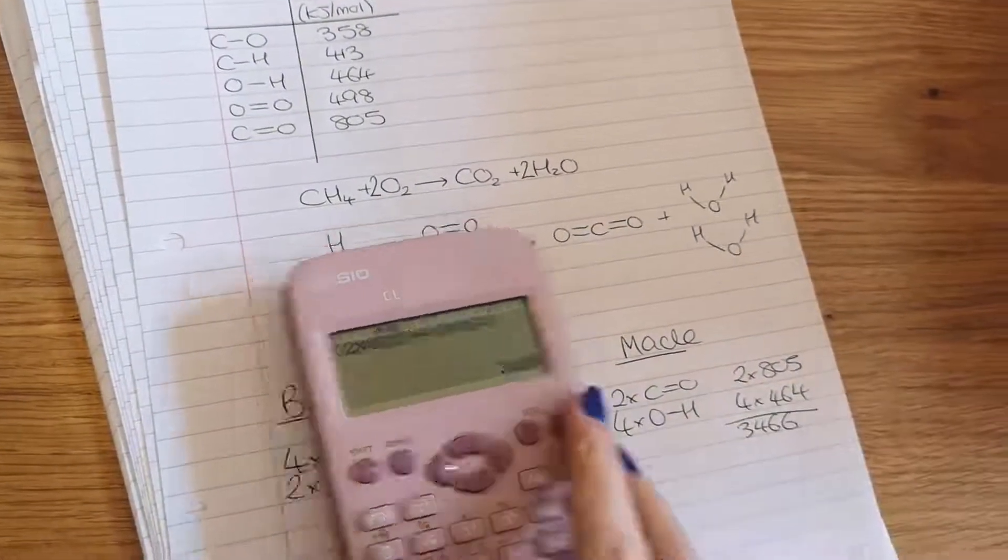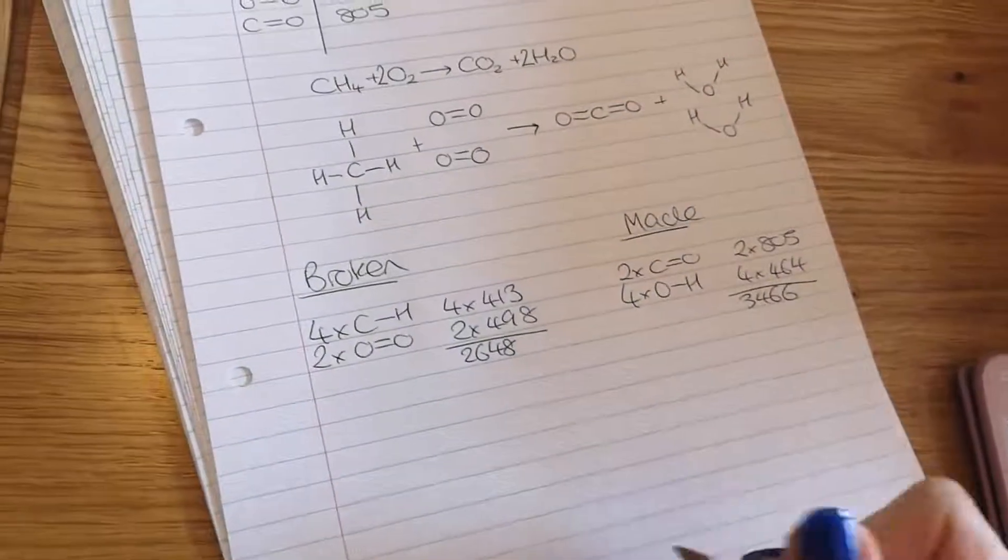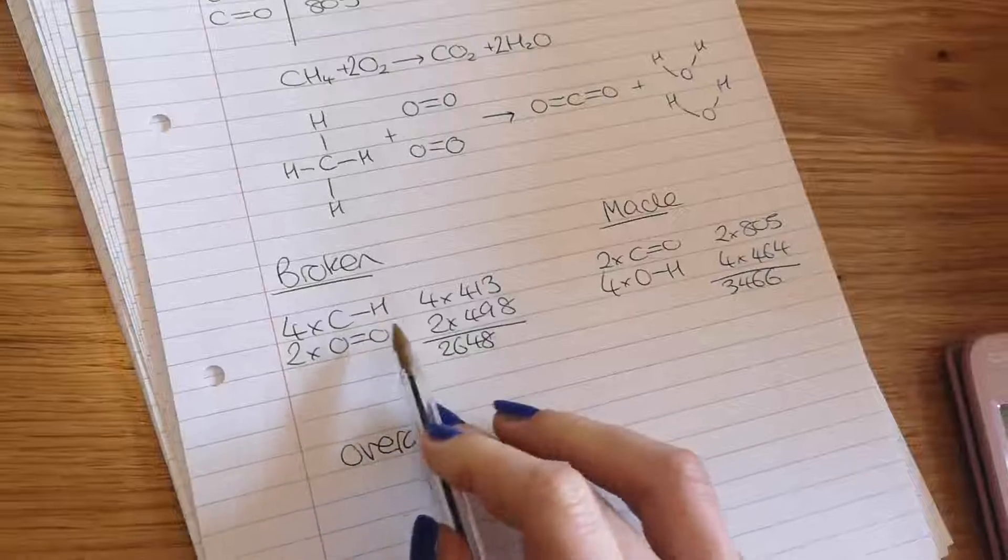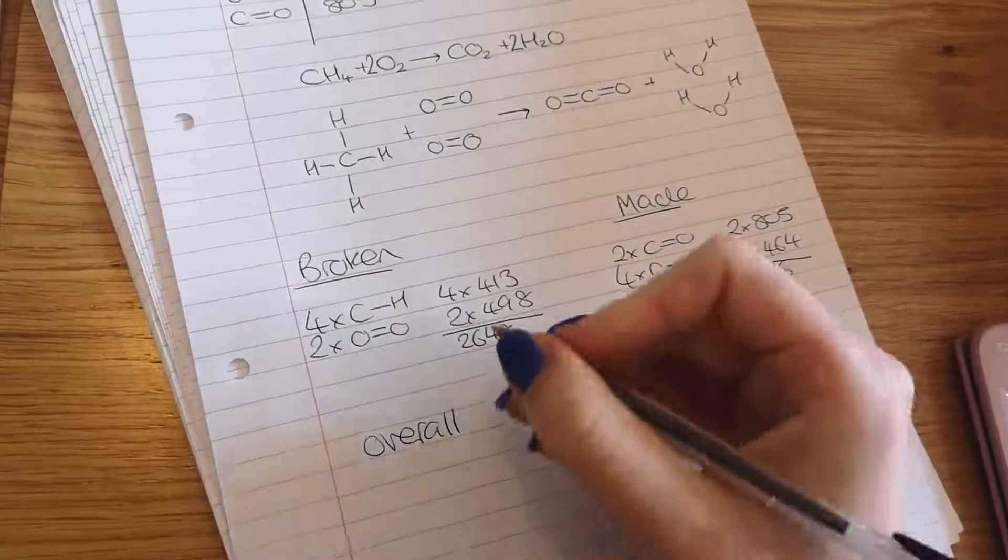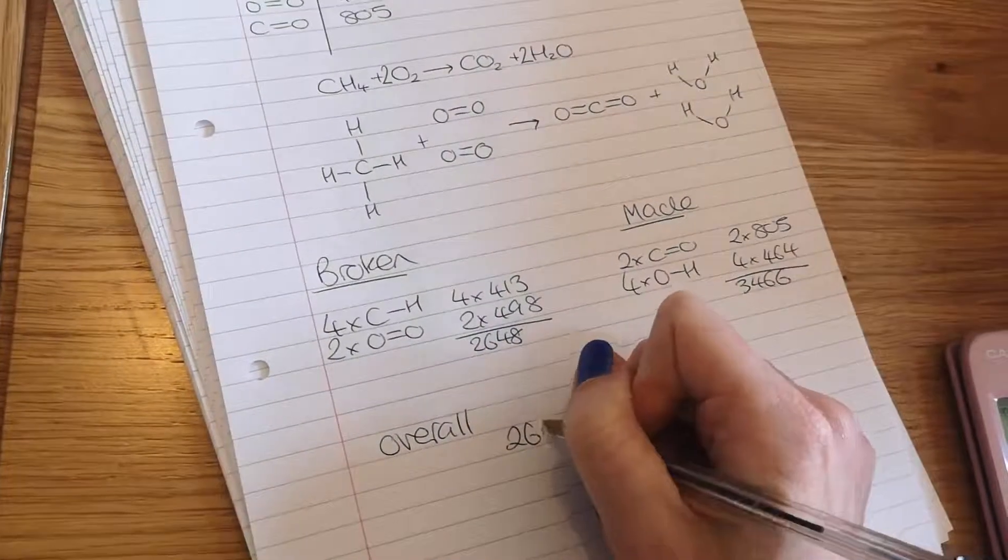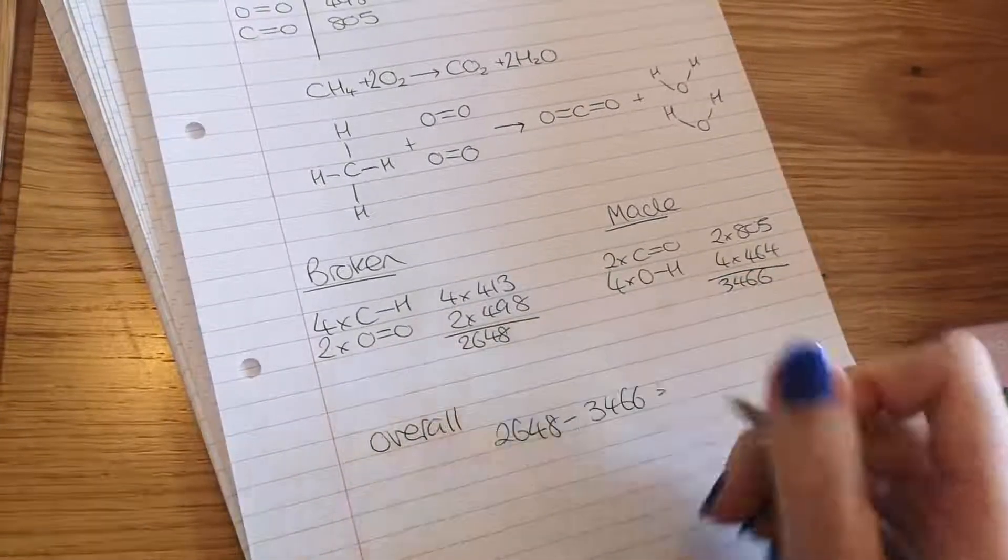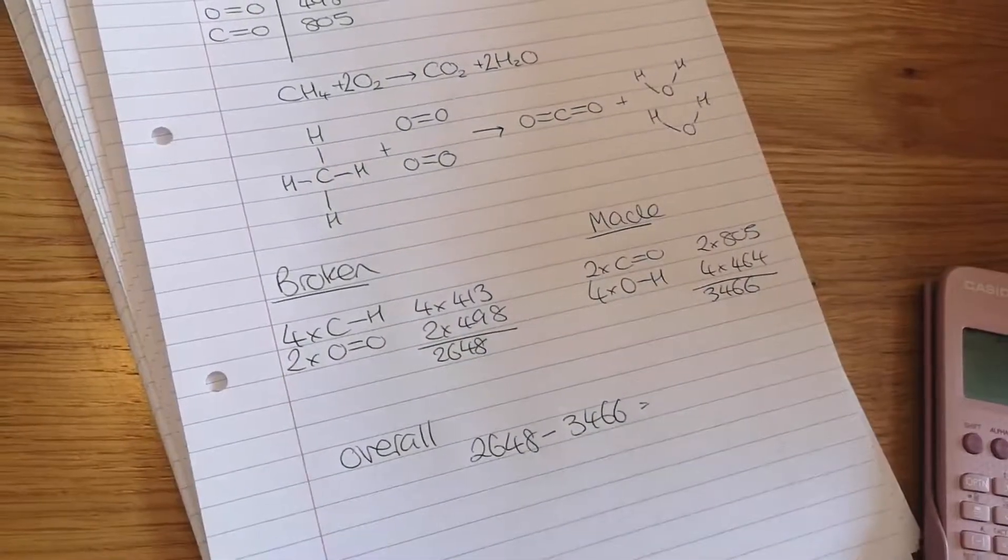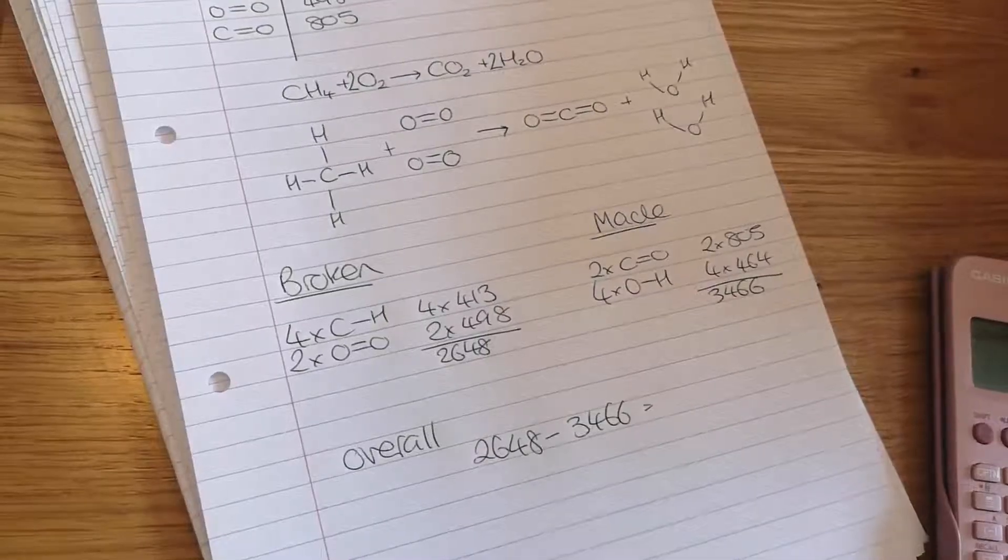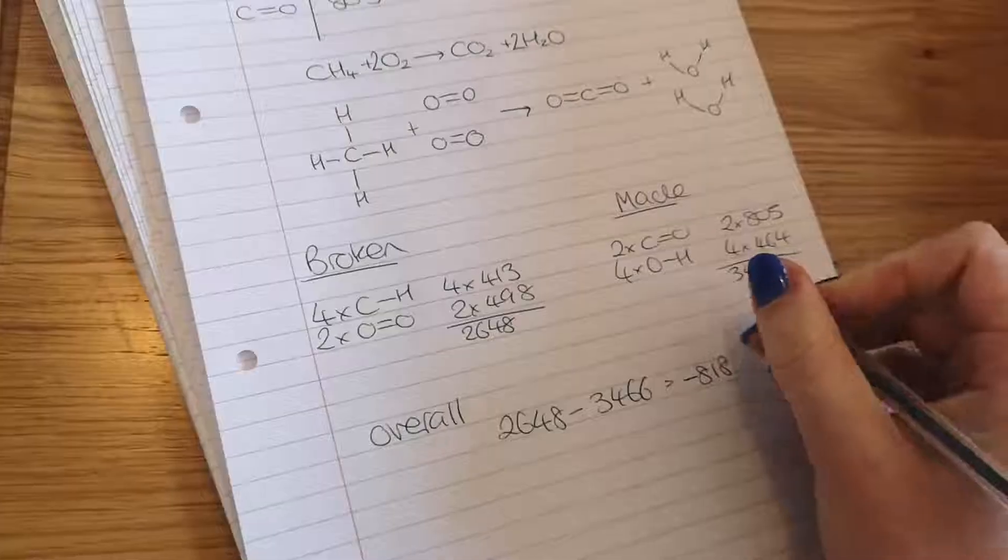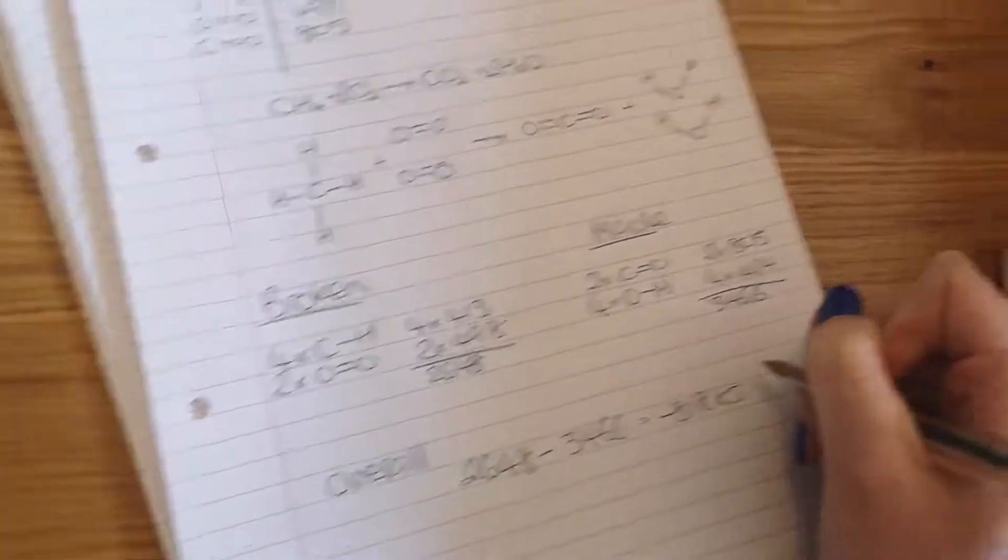3466. Now what you want to do to work out the energy change overall is do all of the bonds that were broken minus all the bonds that were made. So in this case, it's going to be 2648 minus 3466. I'm just tapping into my calculator, which is minus 818. Now the units here are kilojoules per mole.